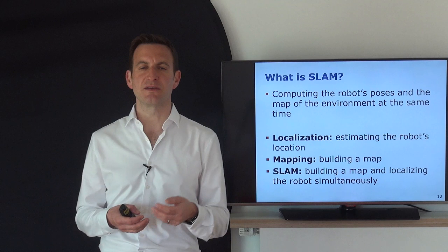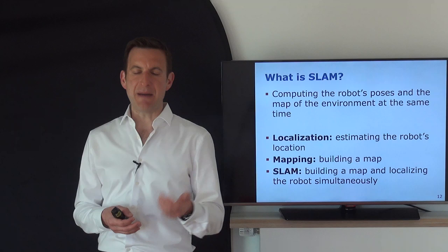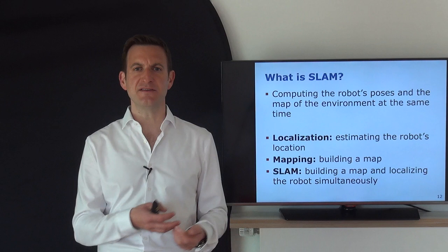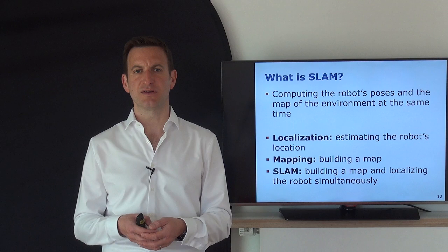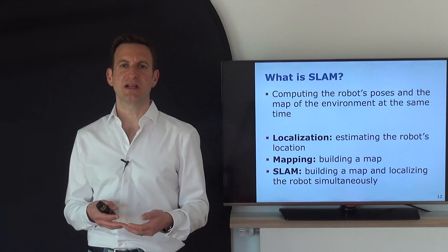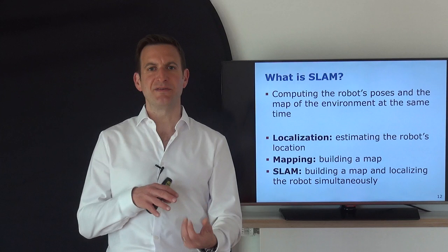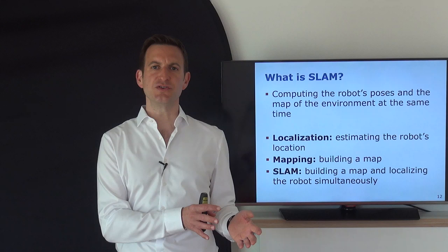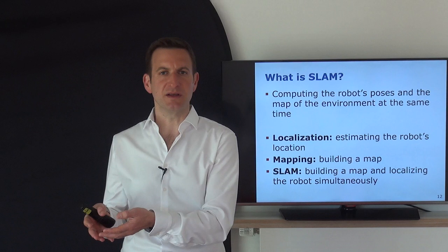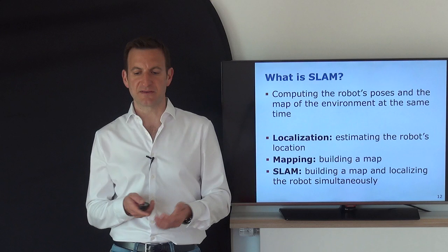Localization is the problem of estimating the pose, answering the 'where am I?' question. Mapping refers to building a map — what does the world look like? SLAM stands for simultaneous localization and mapping, addressing both problems at the same time. This is challenging because we need a map to estimate our pose well, and we need a good pose estimate to build a map. If we have a map, localization is easy. If we have a good pose estimate, mapping is easy. But solving both simultaneously is more challenging.